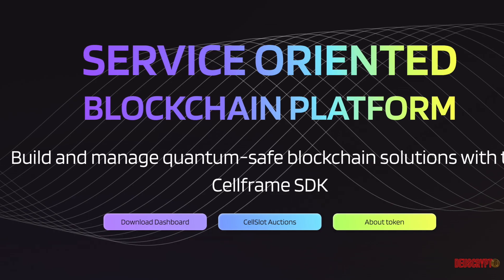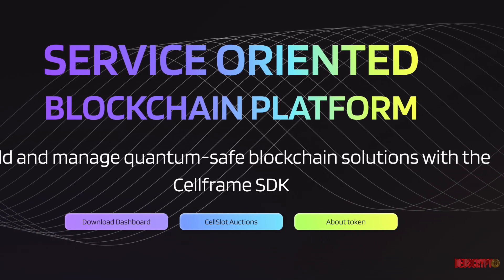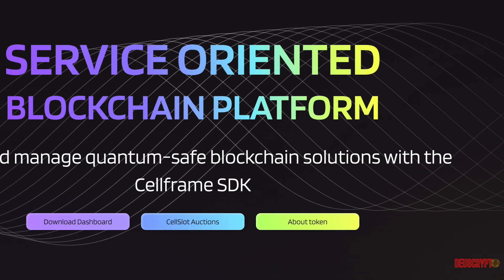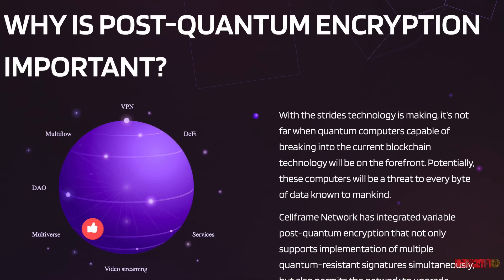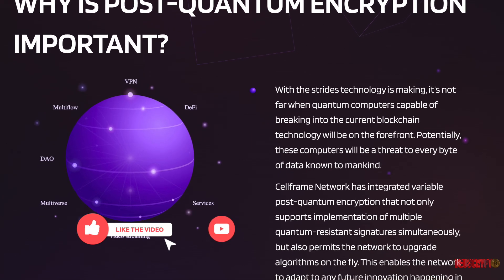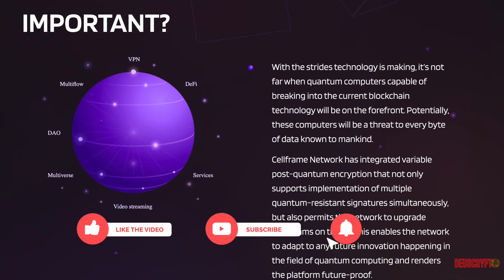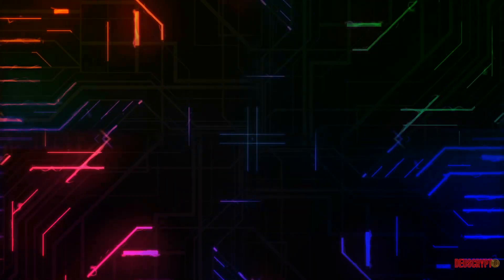CELLFRAME is a quantum-resistant Layer 1 network focused on facilitating secure and scalable cross-chain transfers. CELLFRAME aims to create an infrastructure for decentralized low-level services through its multi-chain nature. It is quantum-safe and uses post-quantum encryption by default.